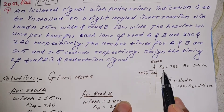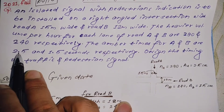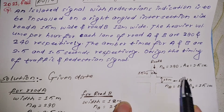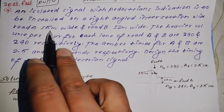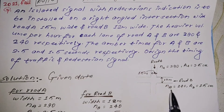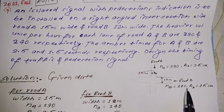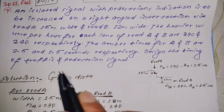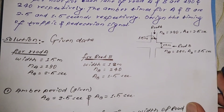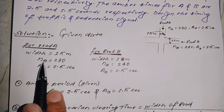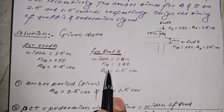From the given data: pedestrian speed is 1.2 meters per second, pedestrian crossing width for Road A is 15 meters, Road B is 12 meters. The amber period for Road A is 2.5 seconds and for Road B is 1.5 seconds, as given in the question.